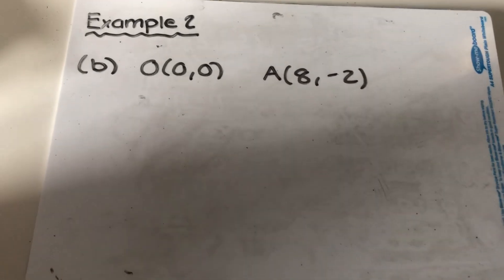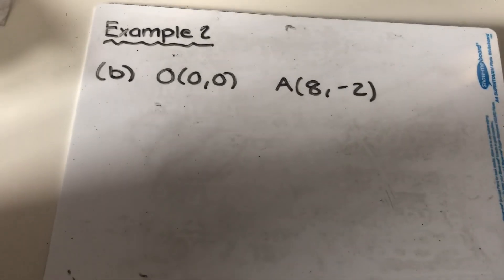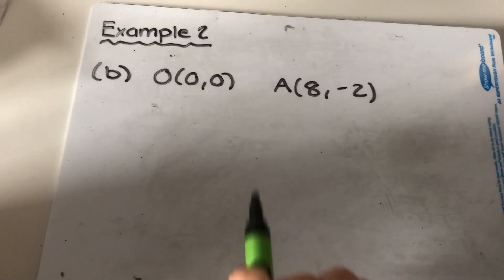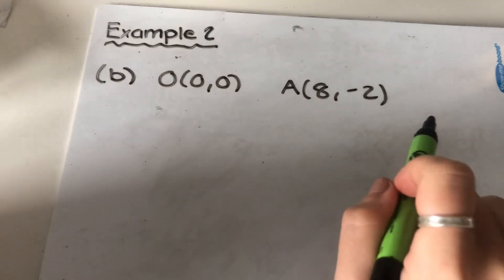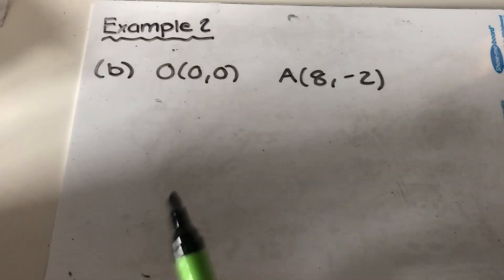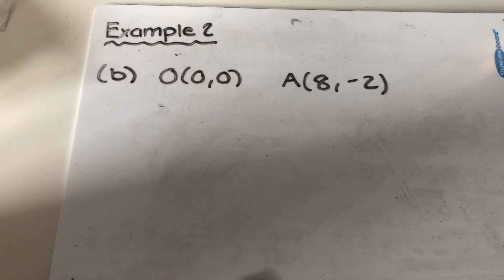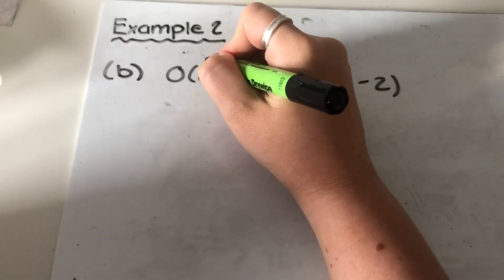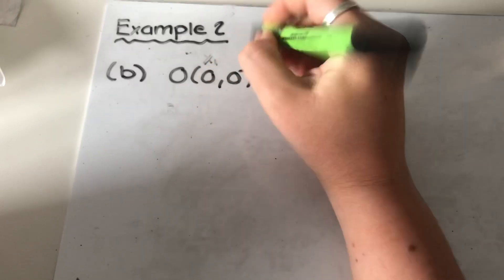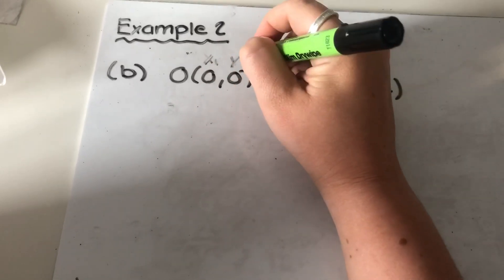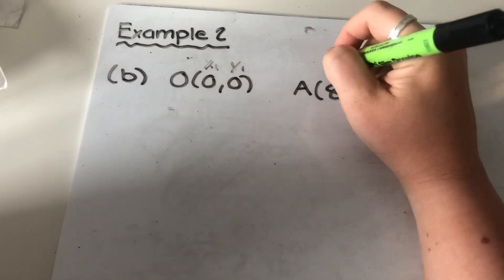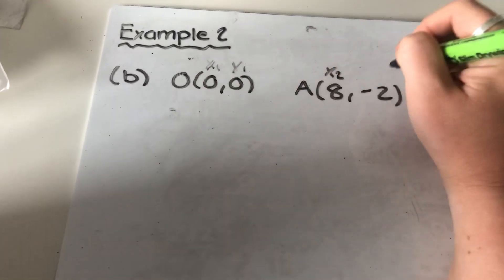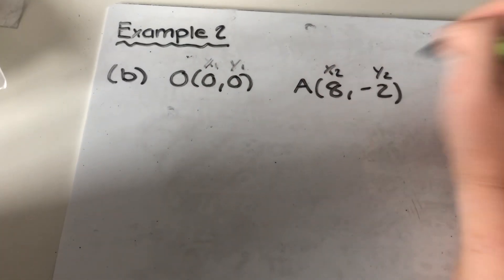One more example like that. So we're finding the equation of the line going through these two points. The first thing we're going to do is label our coordinates x1, y1, x2, and y2.